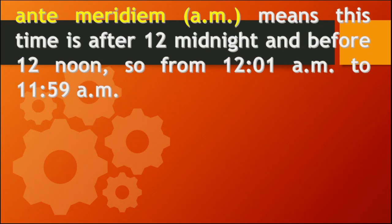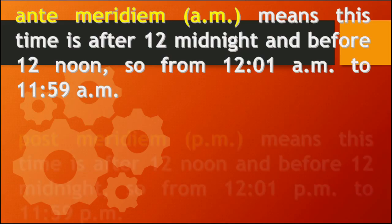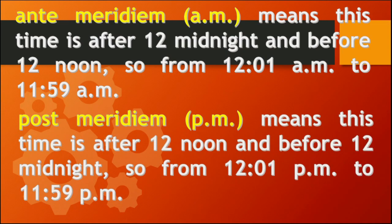Ante meridiem, or AM, means the time is after 12 midnight and before 12 noon — so from 12:01 AM to 11:59 AM. Post meridiem, or PM, means the time is after 12 noon and before 12 midnight — so from 12:01 PM to 11:59 PM.